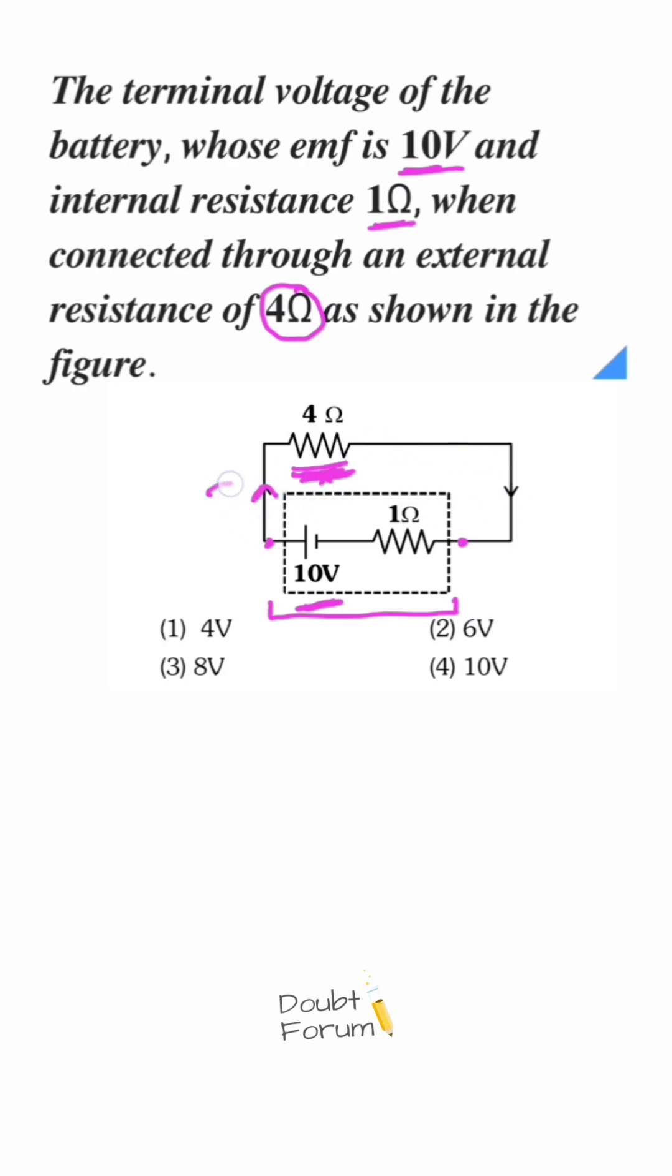and due to which, current would start flowing in the circuit. And because of that, there would be certain voltage drop inside this battery due to its internal resistance.